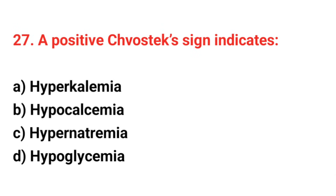Question number 27: A positive Chvostek's sign indicates? The right answer is option B: Hypocalcemia.